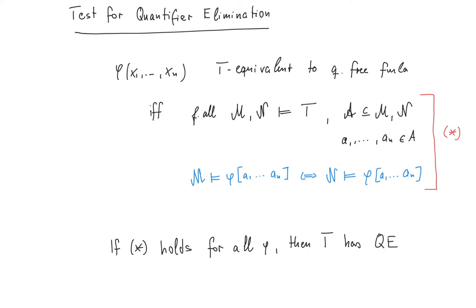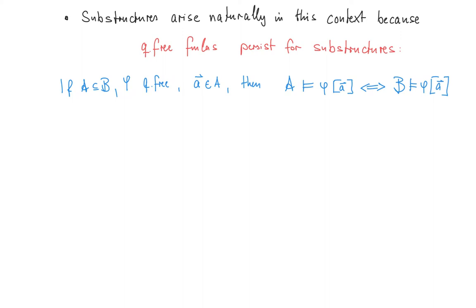In the last lecture we've seen the following test for quantifier elimination. A formula phi is T-equivalent to a quantifier-free formula if and only if for all models M and N of T, and any substructure A of M and N, and any tuple from A, the formula phi of a1 up to an holds in M if and only if it holds in N. And if this condition holds for all phi, then T has quantifier elimination.